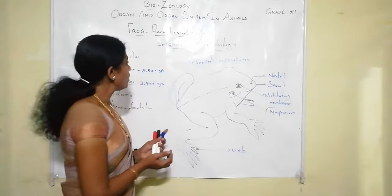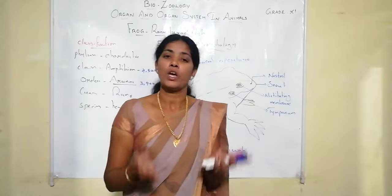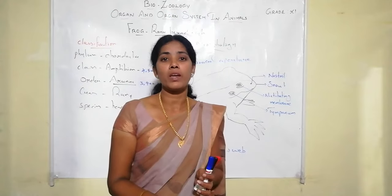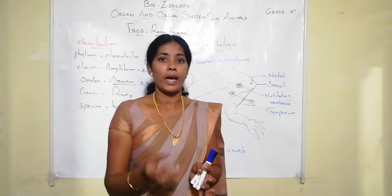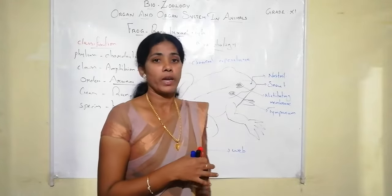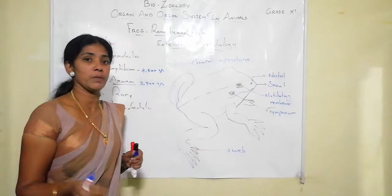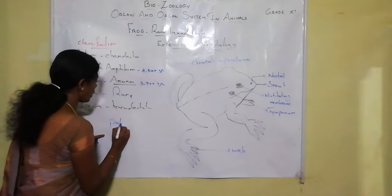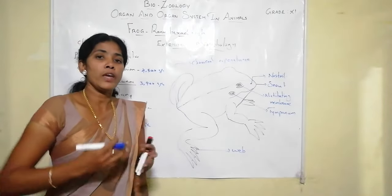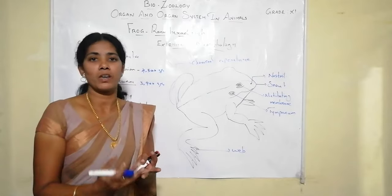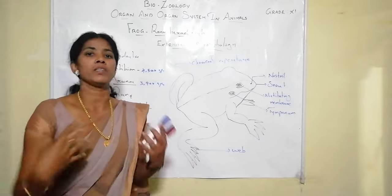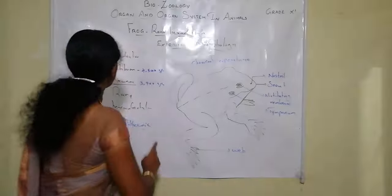The frog's habitat includes ponds, streams, lakes, and wetlands. Its food habits include insects, small fishes, worms, and snails. The frog is a poikilothermic animal — meaning it changes its body temperature according to environmental changes. It can alter its own internal body temperature as per the external environment.